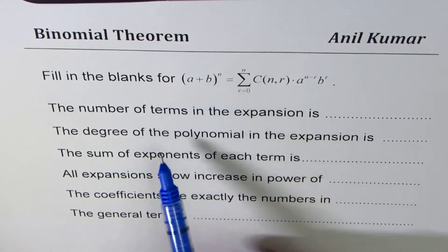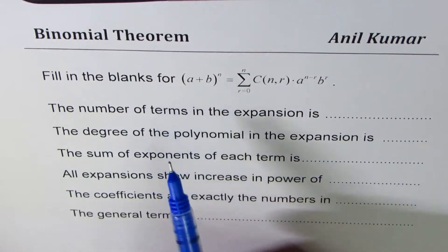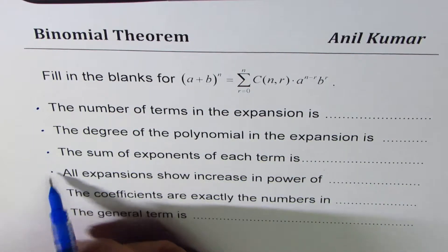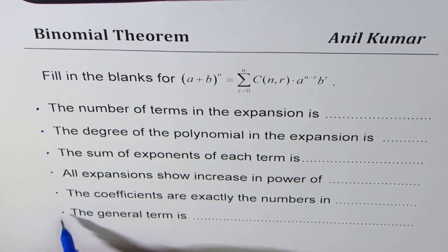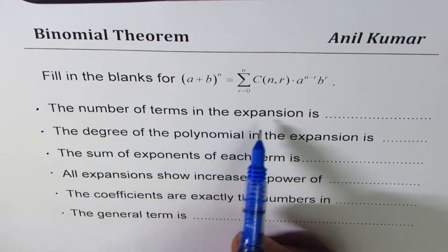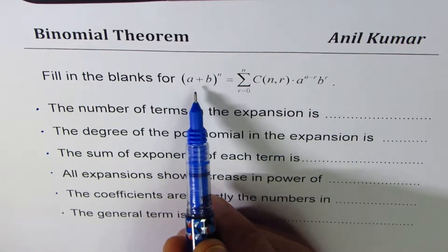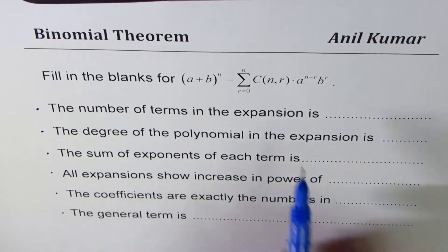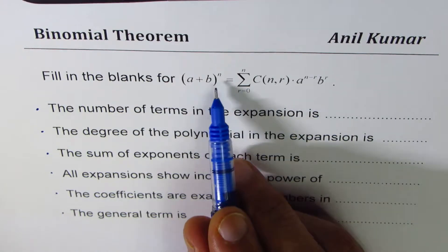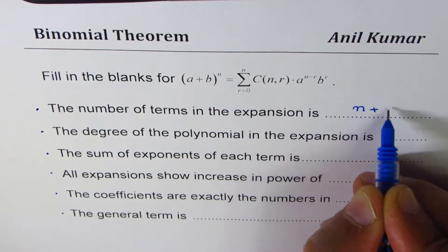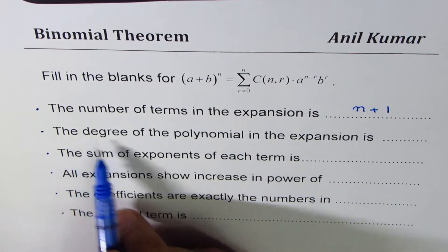Related to this expansion, we have a couple of questions. You can pause the video, copy the questions, answer them, and then look into my suggestions. First one: the number of terms in the expansion of (a + b) to the power of n — how many terms are there? Are they n or n plus 1? Well, there are n plus 1 terms.